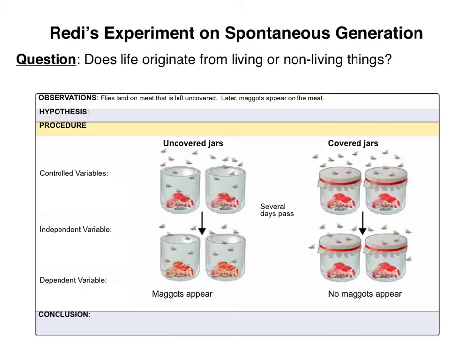As you can see here, your book already uses a term which I don't want you to use in this class. Scientists don't often refer to controlled variables, and if they do, what they really mean to say are constants. Constants are controlled variables — they're not the same as the control. I'm hoping at this point you can make a list of some of the constants that Redi would have had to keep the same during the experiment. Pause the video and take a few minutes to jot down some of those constants in your notebook.